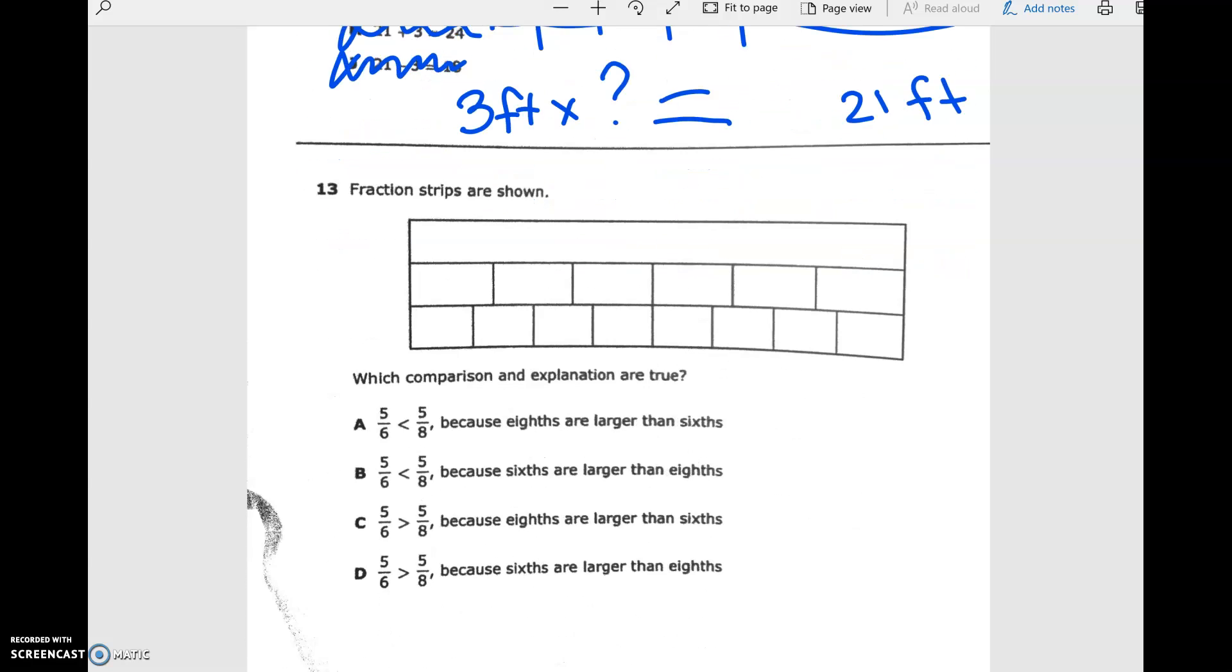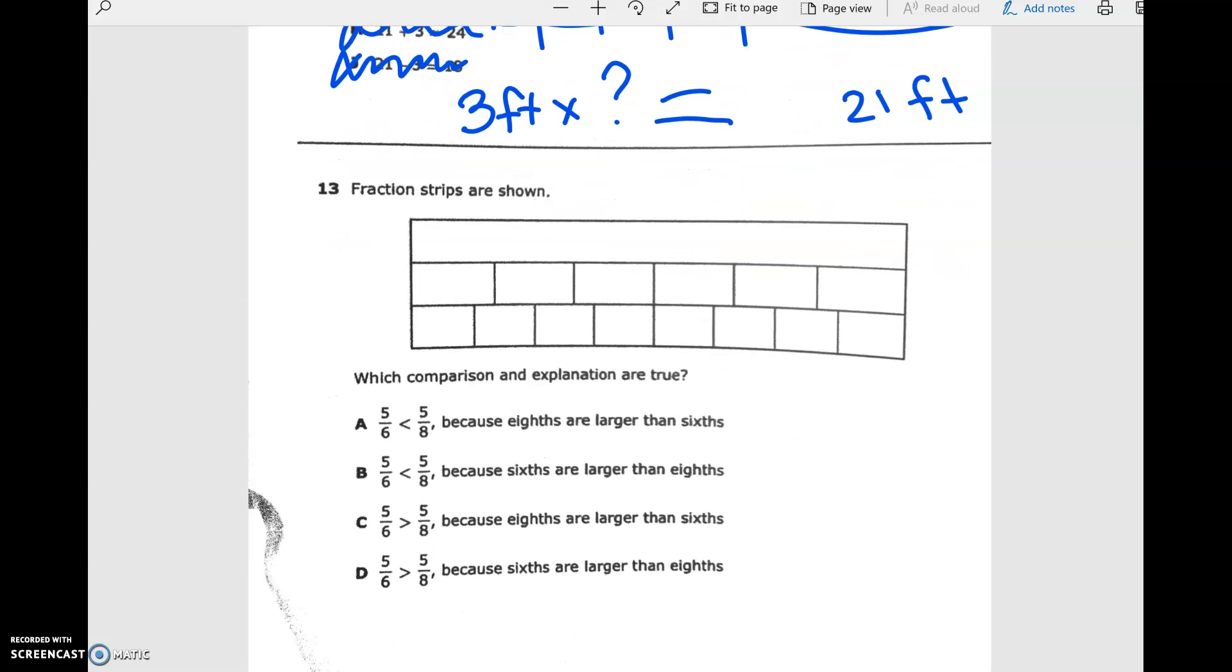And finally, fraction strips are shown. Now, I hope that on your paper, maybe you wrote down what the fractions were. So this will be 1. 1, 2, 3, 4, 5, 6. So these are 1 sixths. 1, 2, 3, 4, 5, 6, 7, 8. And these are 1 eighths. So we've got 1, 6, 1 sixths. And 8, 1 eighths. Which comparison and explanation are true? 5 sixths is less than 5 eighths.